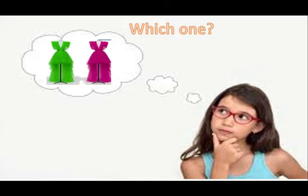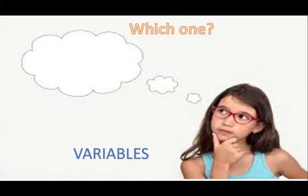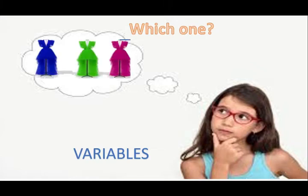The colors green and purple are the variables of the dress. As we have noticed, this is what we call variables. Now, sometimes variables are not just between two choices — sometimes we can add more to it. Like in this case, we have the color blue dress.